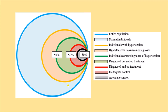In the diagram, the dark blue line indicates the entire population. The sky blue shaded area represents normal individuals. The yellow area represents individuals with hypertension. Of the hypertensive individuals, 50% are unaware or undiagnosed. The green area shows those who are aware or diagnosed; of them, only 50% are treated; and of those treated, only 50% are adequately treated or have their blood pressure adequately controlled. This is the rule of halves.